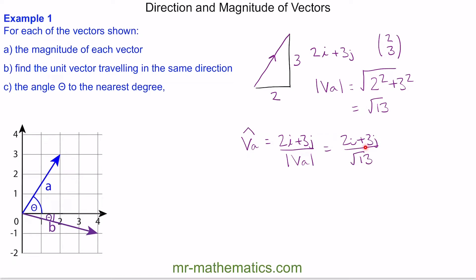Now we have an irrational denominator, so we need to rationalize this. We can do this by multiplying the numerator and denominator by root 13. Because we're multiplying by one, we're not changing the vector. So the numerator becomes root 13 times (2i + 3j), and for the denominator the square roots cancel, giving us over 13. This is our unit vector.